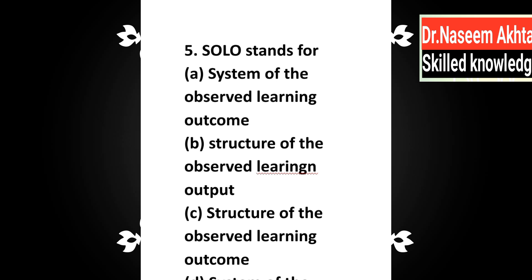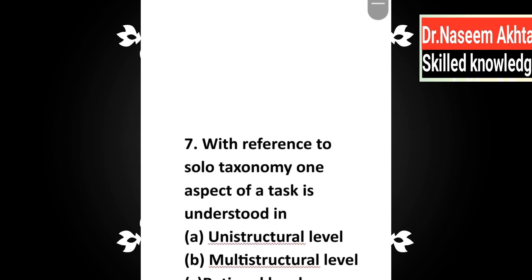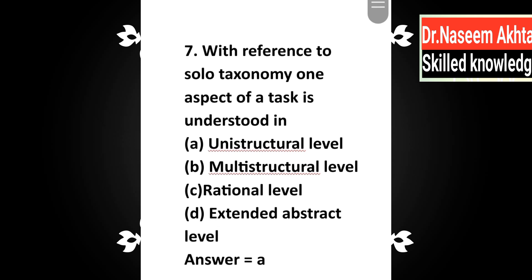Question 6: SOLO taxonomy consists of how many levels — a) 2, b) 3, c) 4, d) 5? Correct answer is C: four levels. Question 7: With reference to SOLO taxonomy, one aspect of a task is understood in — a) unistructural level, b) multi-structural level, c) rational level, d) extended abstract level. Correct answer is A: unistructural level, because we are talking about one aspect.